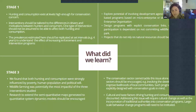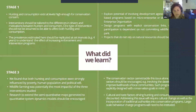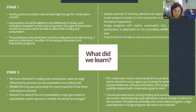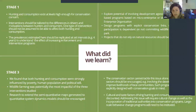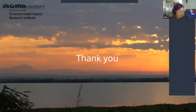In conclusion, the conservation sector cannot tackle this issue alone. We need transdisciplinary and multi-sector cooperation, balancing conservation goals with development goals — especially in contexts like Malawi, the eighth poorest country in the world. We must be aware of the multiple constraints that conservation faces in these situations. Finally, cultural and taste factors are very important for consumption in particular, so addressing this issue will require some level of cultural change and incorporation of traditional authorities. That's what I learned in my PhD — thank you all so much for your attention.